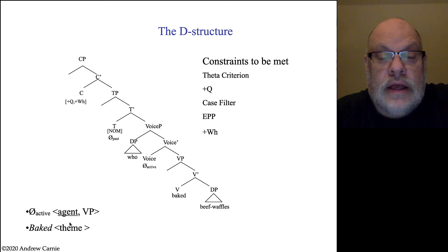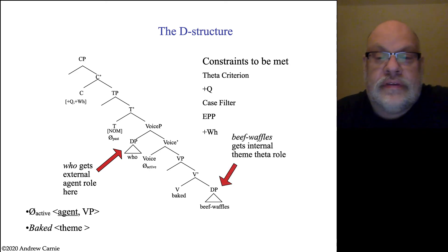So the first thing we have to check is the theta criterion. The theta criterion here is met the same way as for the sentence we looked at in video 12.2. We have a voice phrase which introduces the agent and takes a VP complement. The agent here is who. And we have a lexical verb baked that takes a theme complement, which is represented here by the DP beef waffles. So who is getting its external theta role in the specifier of voice phrase and beef waffles gets its internal theme role as the complement to the verb. The theta criterion is met.